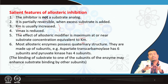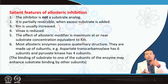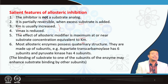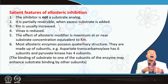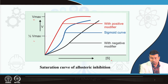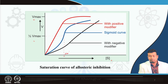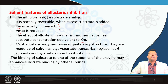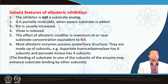Km is the substrate concentration at which the velocity of the reaction is half of the maximum velocity. If we plot the maximum velocity and drop a tangent at half Vmax, that value of substrate concentration is the Km for this reaction. So what allosteric inhibition does to Km: it increases the Km and reduces the Vmax, as you can see from the plot.